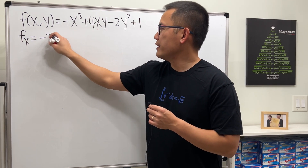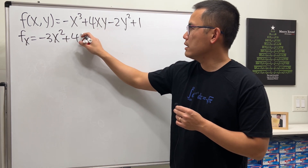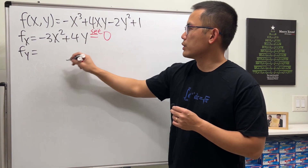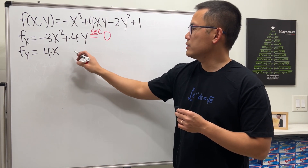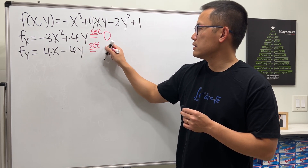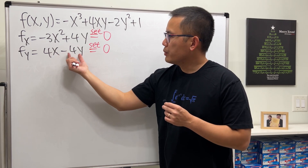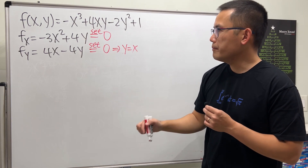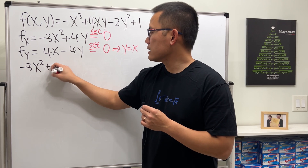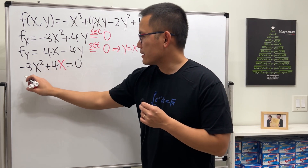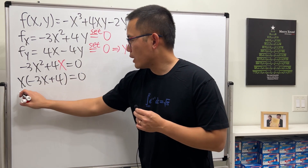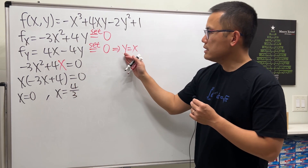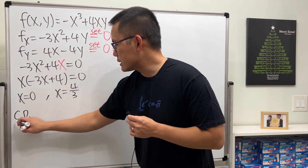Now let's do another example. For f_x, we get −3x² + 4y and set that equal to zero. For f_y, we get 4x − 4y and set that equal to zero. From the second equation, y = x. Substituting into the first: −3x² + 4x = 0, factor out x: x(−3x + 4) = 0, giving x = 0 or x = 4/3. Our two critical points are (0, 0) and (4/3, 4/3).